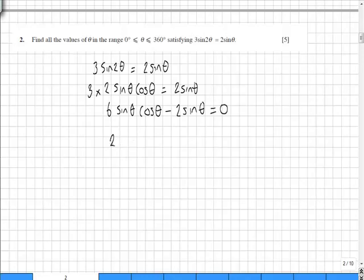We can take out 2 sine theta, leaving us with 3 cos theta minus 1 is equal to 0.